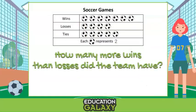Now let's look at a pictogram. The pictogram describes our soccer games — it has the number of wins, number of losses, and the number of ties. The most important part of pictograms is the scale. Our scale says each soccer ball represents two, so when we count, we have to count by twos.